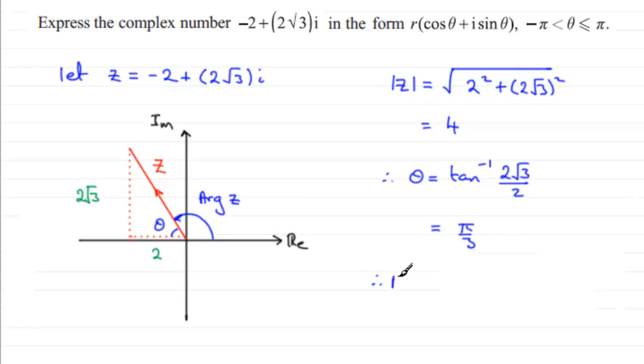So therefore the arg of Z will be equal to, well that's π radians, half a turn. π minus π/3 is going to be 2π/3. So that's our arg of Z.